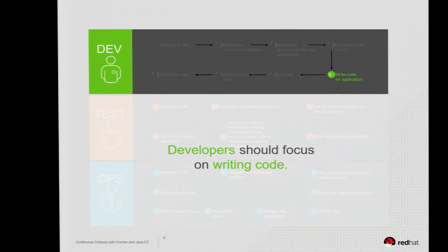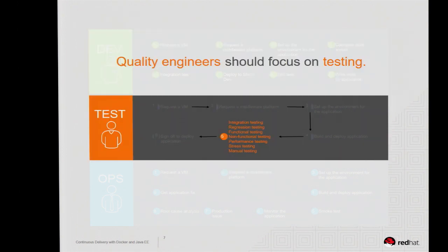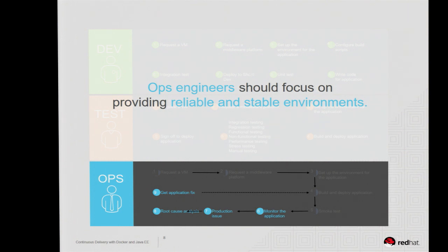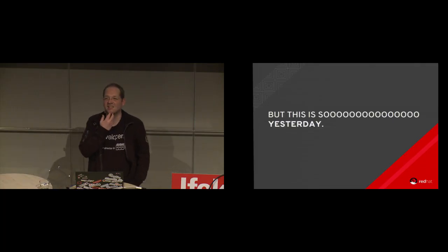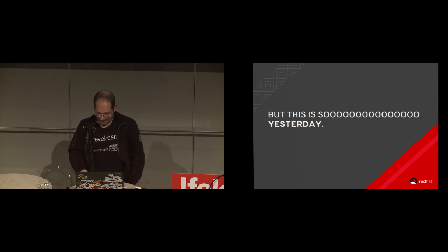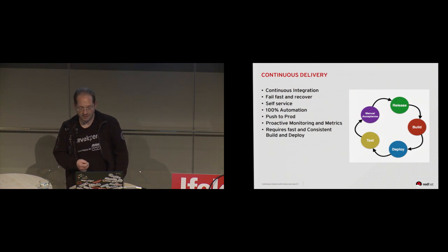As a developer I just want to write code — I don't want to send binaries around, I just want to focus on getting things done, implementing my features. We do need quality engineers who check if implementations are correct, but those people should focus on that — not on getting environments. Ops should focus on providing a reliable environment — that's their goal. That was a nice retrospective. The new keyword here is continuous delivery.